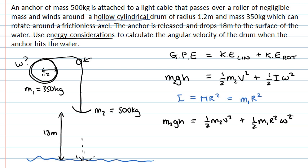And now as it's the angular velocity that we're trying to find, so we're trying to find what this omega is, we need to have a relationship between the linear velocity of the anchor moving down and the angular velocity of the drum spinning around.